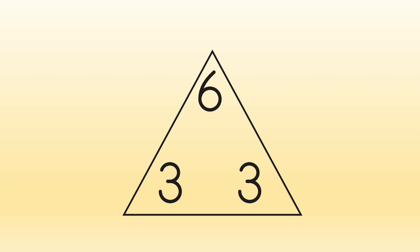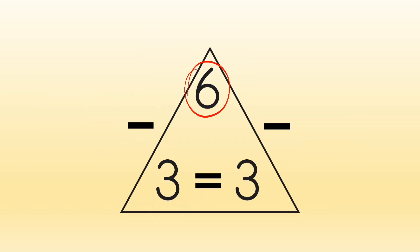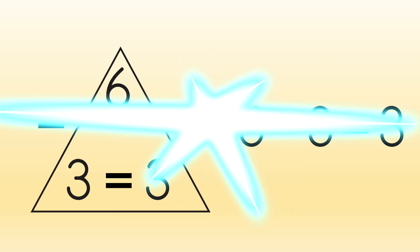And when you start at the top, go down and over, you get subtraction facts. 6 minus 3 equals 3. Again, both subtraction facts are the same, so we will only list it once.